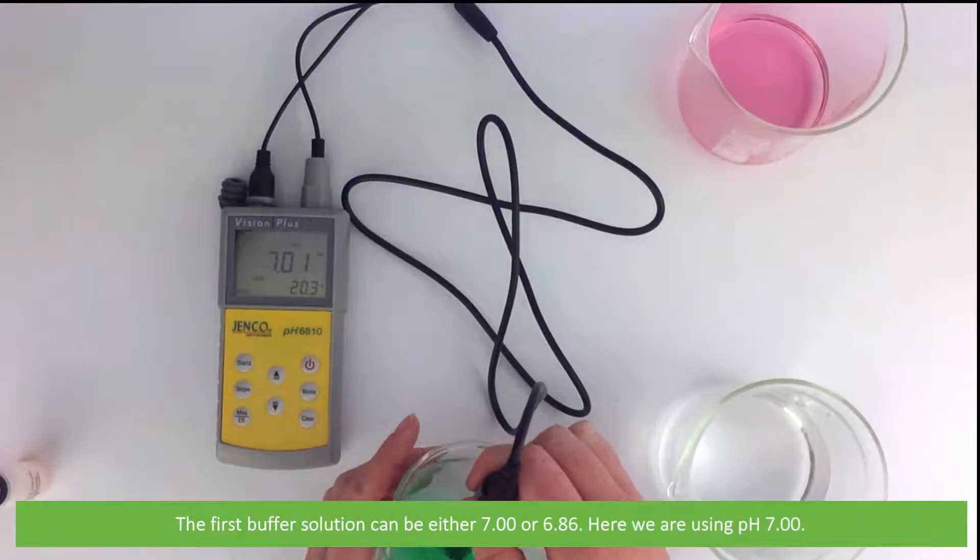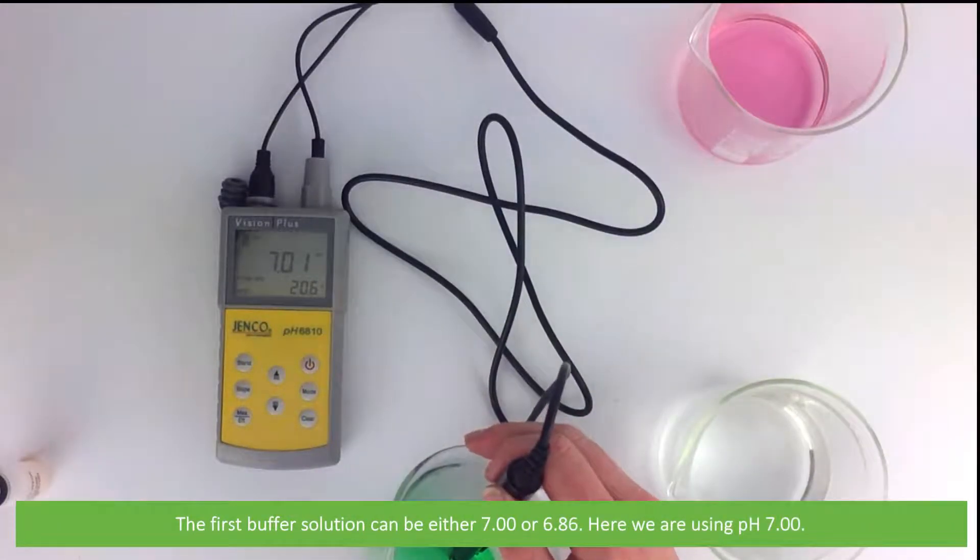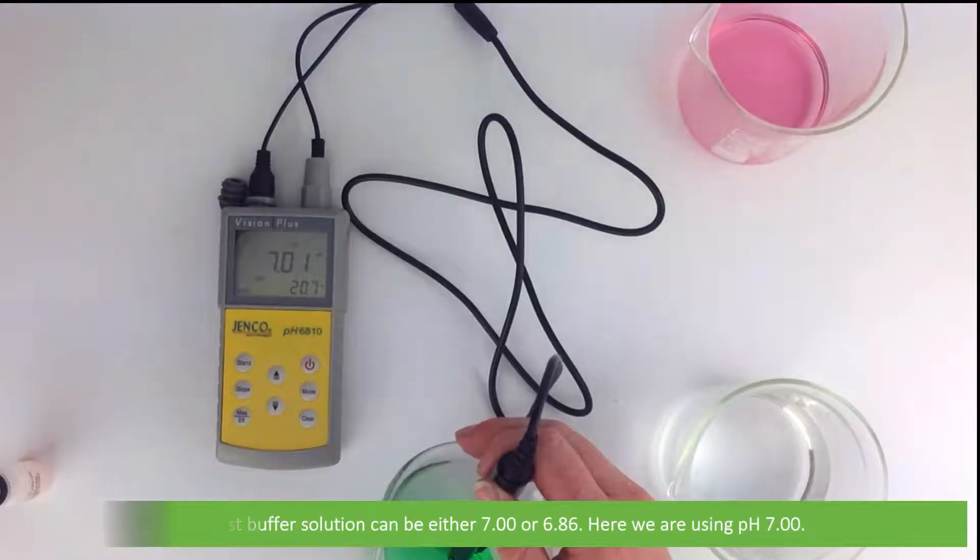The first buffer solution can either be 7.00 or 6.86. Here we will be using 7.00.